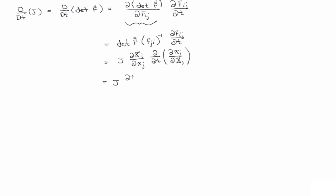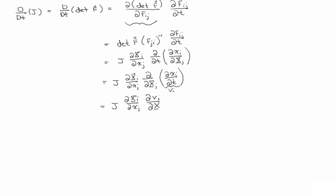Switching the order of differentiation, we have J times (partial X_i / partial x_j) times (partial/partial X_j)(partial x_i / partial t). Now, partial x_i / partial t is the time derivative of the position vector, which we call velocity. So we replace that with v_i, giving us J times (partial X_i / partial x_j) times (partial v_i / partial X_j), which rearranges to J times (partial v_i / partial x_j) times (partial x_i / partial X_j).